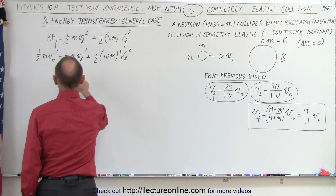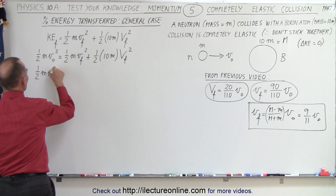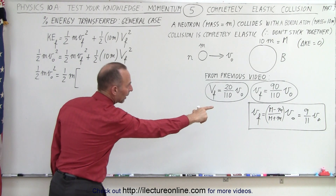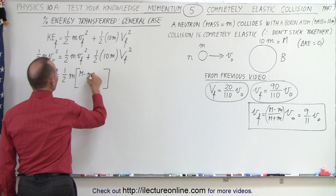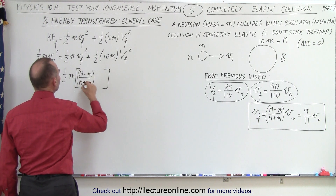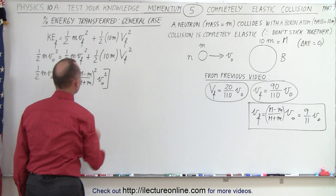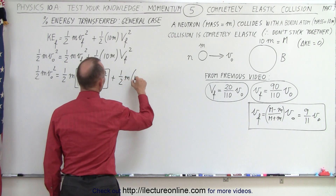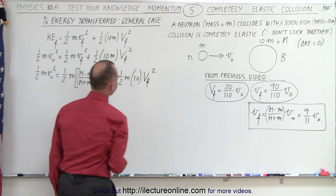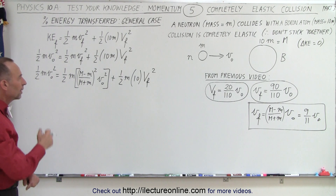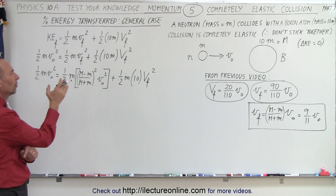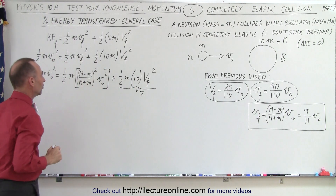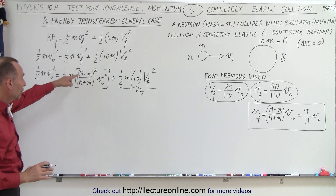If we plug that in, we can say that 1/2 m v_initial² equals 1/2 m times (big M minus little m divided by big M plus little m)² times v_initial², plus 1/2 times 10m times v_final² of the boron. Now we're going to need something else there so we can get the equation to balance. Let's plug in those values and see what we get.